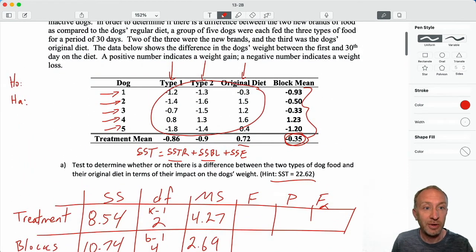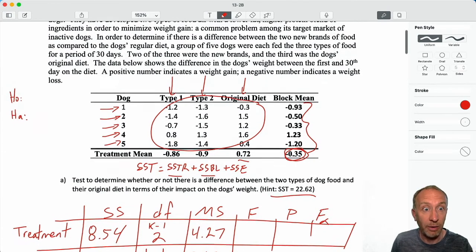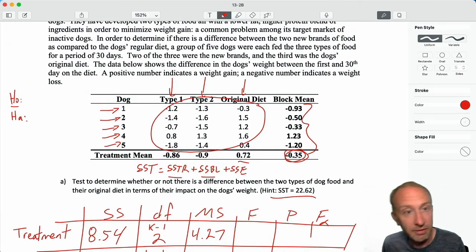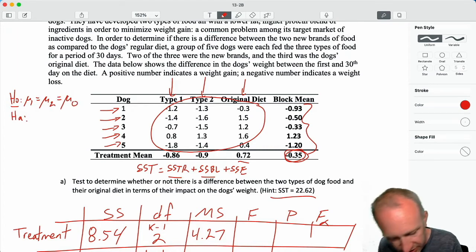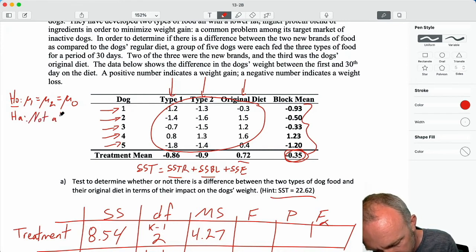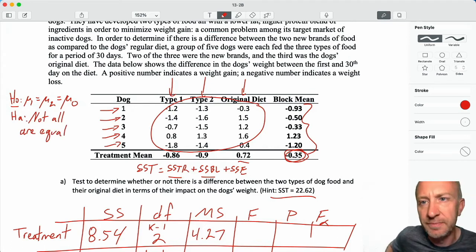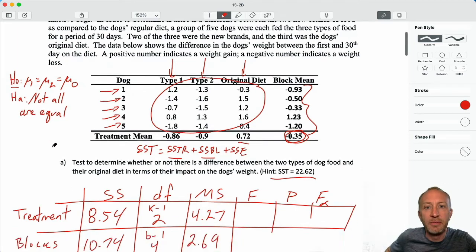You know what I just noticed? I started writing my null and alternative, and then I got distracted. Mu 1 equals mu 2 equals mu original. The alternative: not all are equal. I'm getting sloppy here.